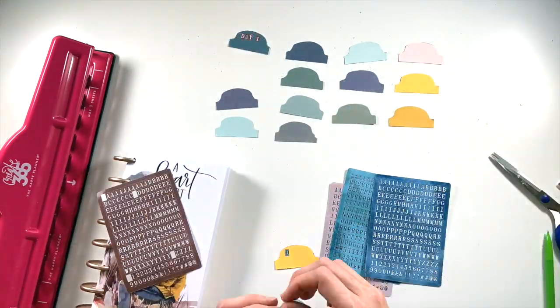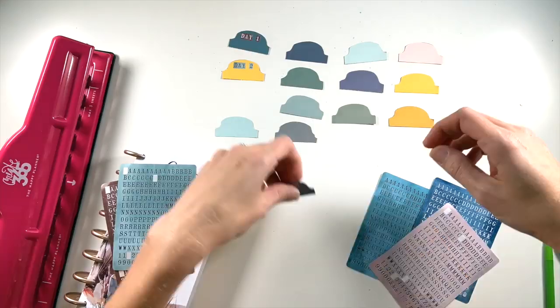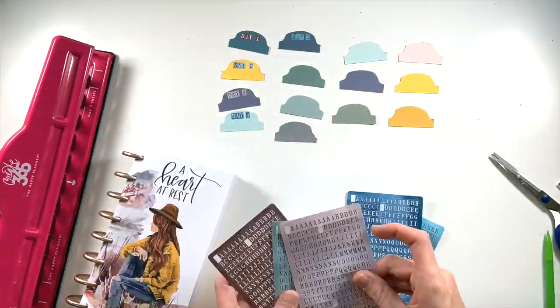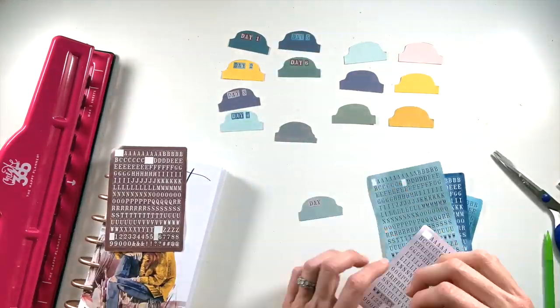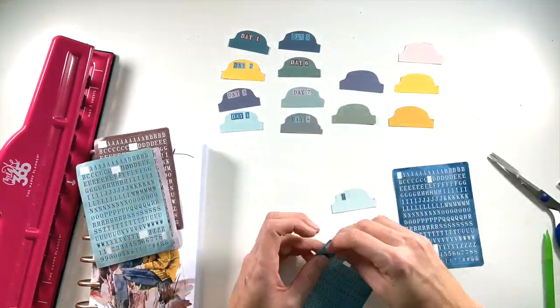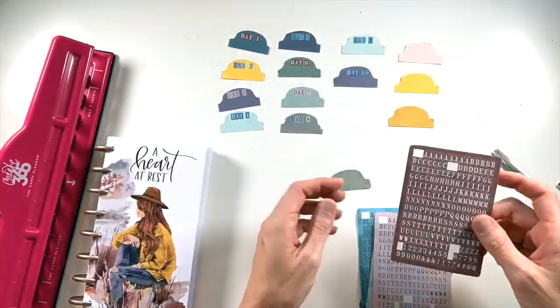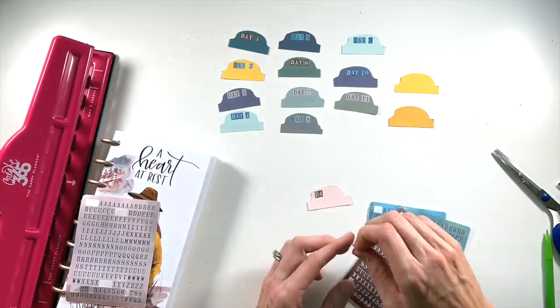I also decide to use my trusty tile alphas, and I'm going to label each tab with the day and the number, that way as I'm looking at my journal I'll know where to flip through, what day I'm on, and it just keeps it even more organized while I'm working.